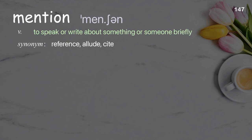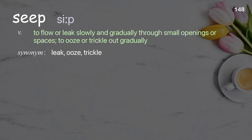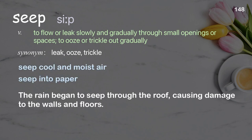Mention. To speak or write about something or someone briefly. Seep: to leak slowly and gradually through small openings or spaces; to ooze or trickle out gradually. The rain began to seep through the roof, causing damage to the walls and floors.